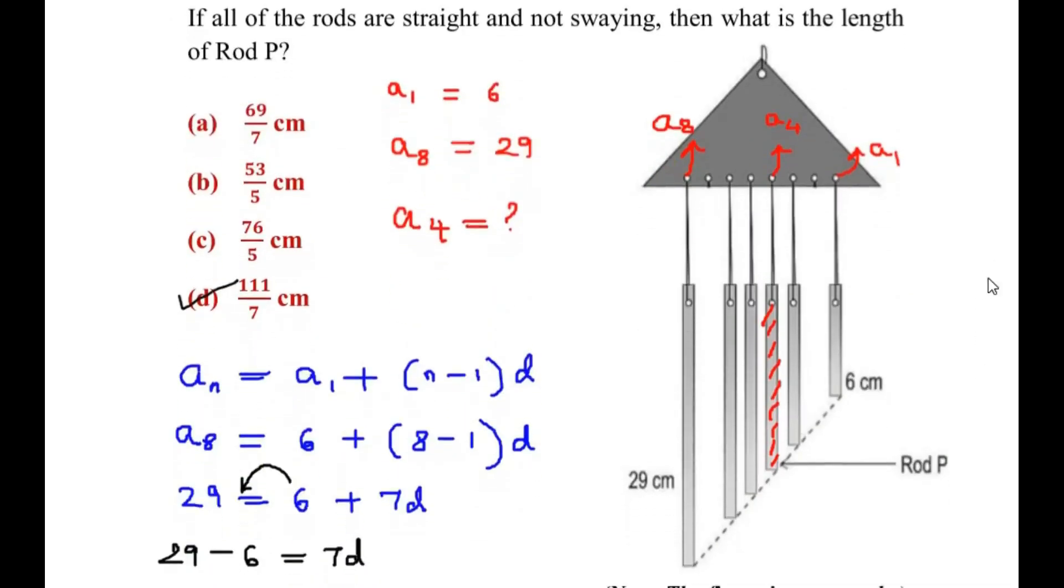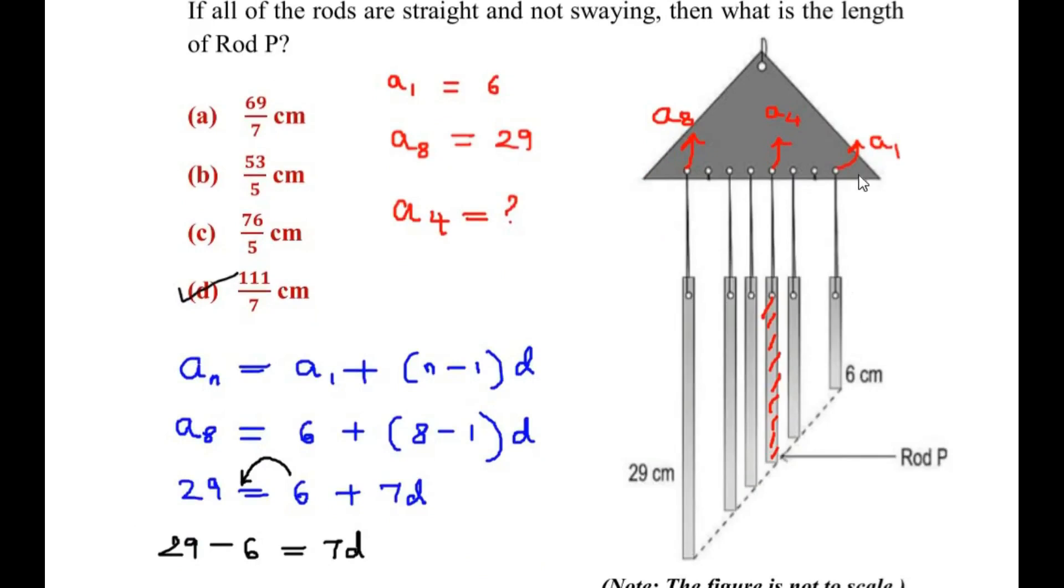So remember, the 6 cm we are going to take it as the first term. Then progressively we are going to take the second term, third term, and fourth term.